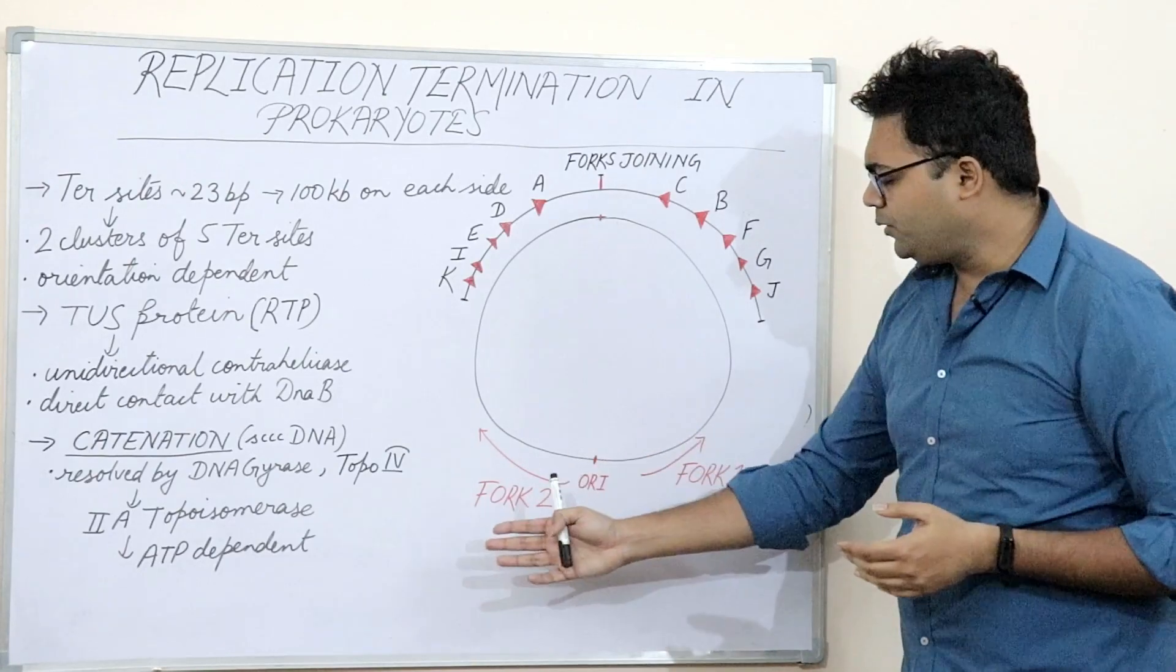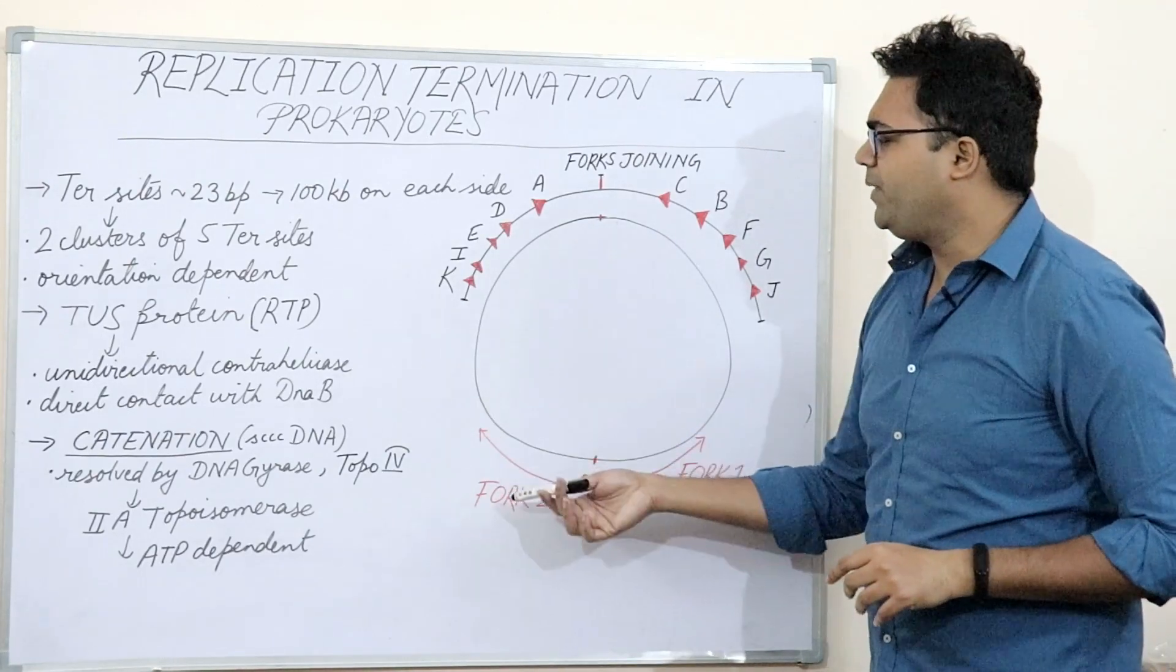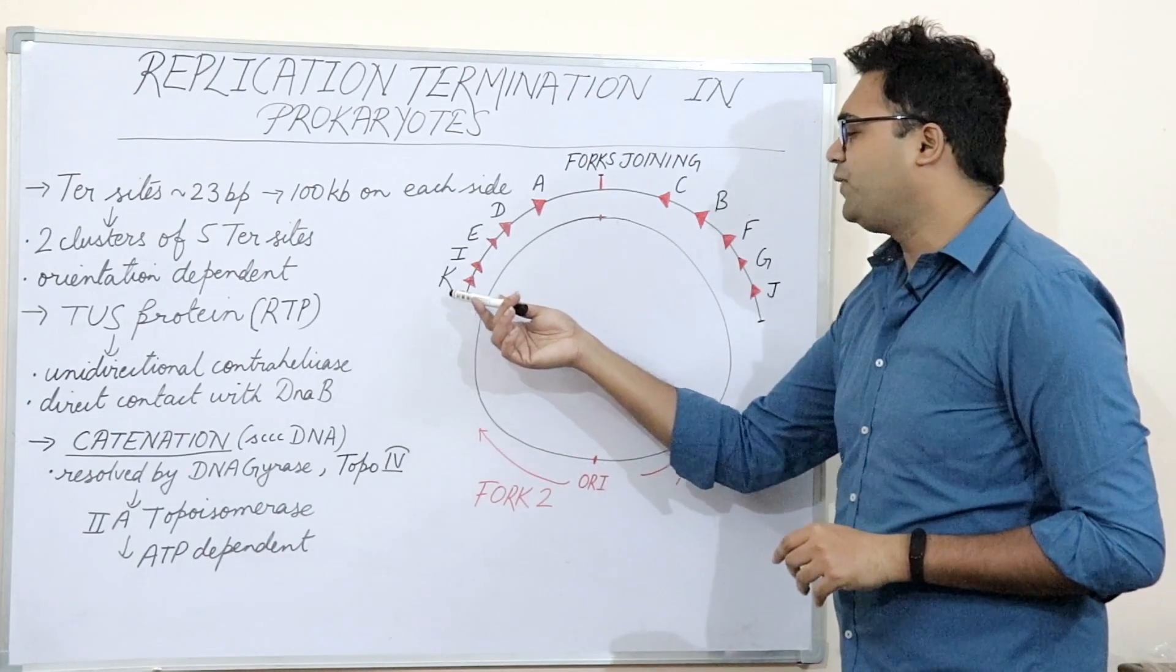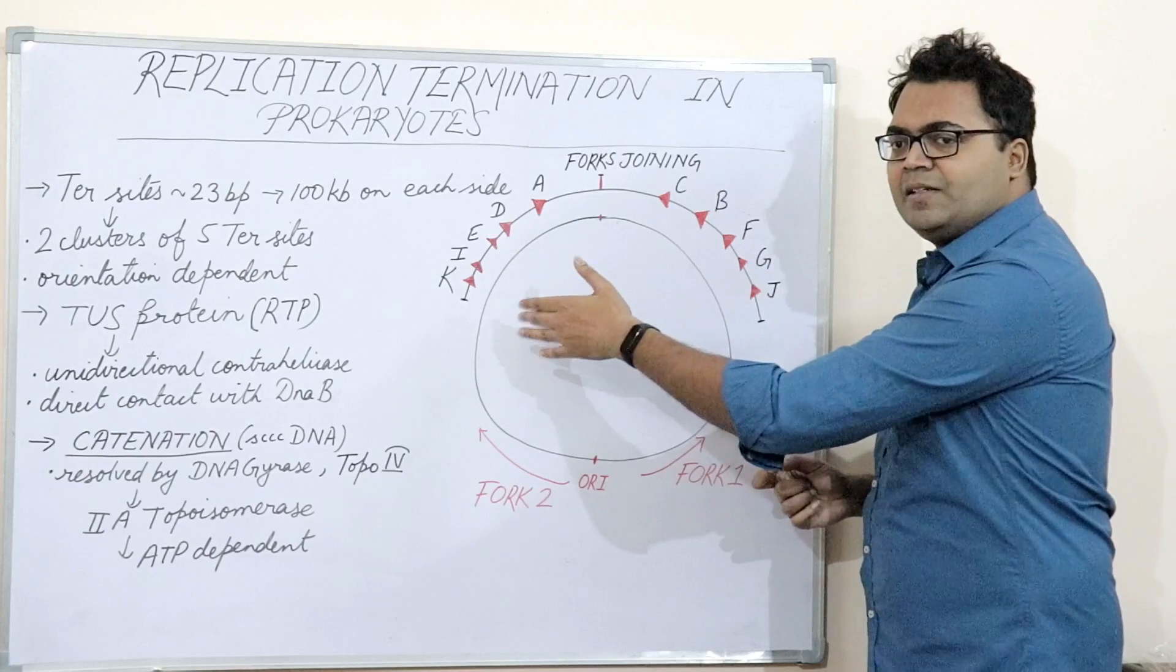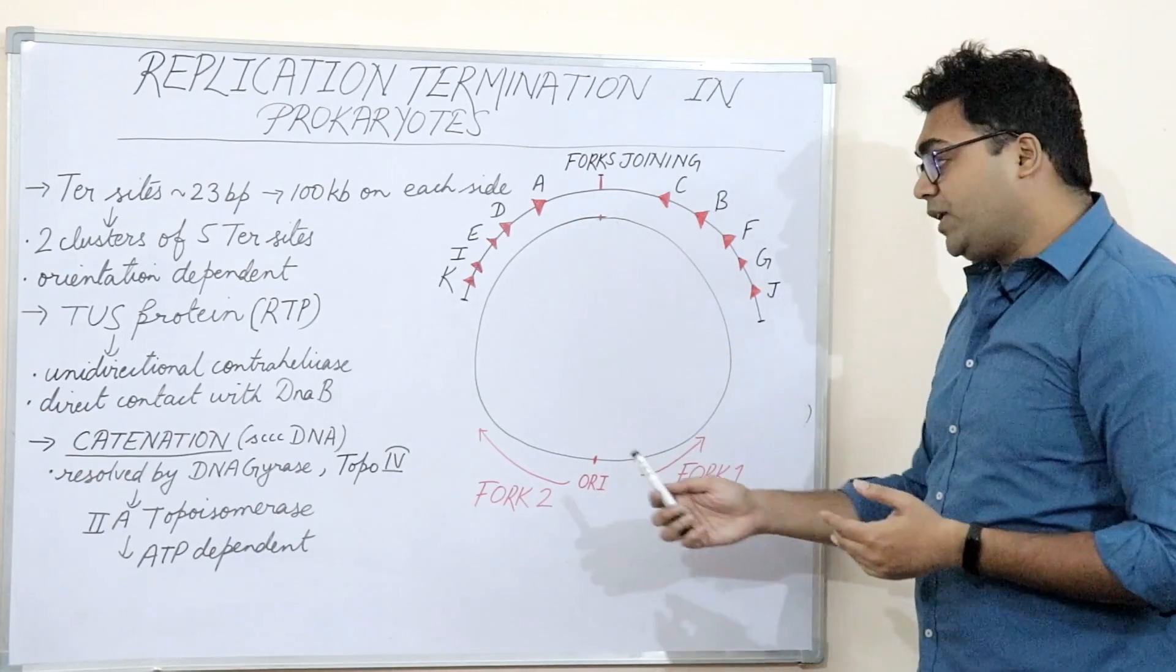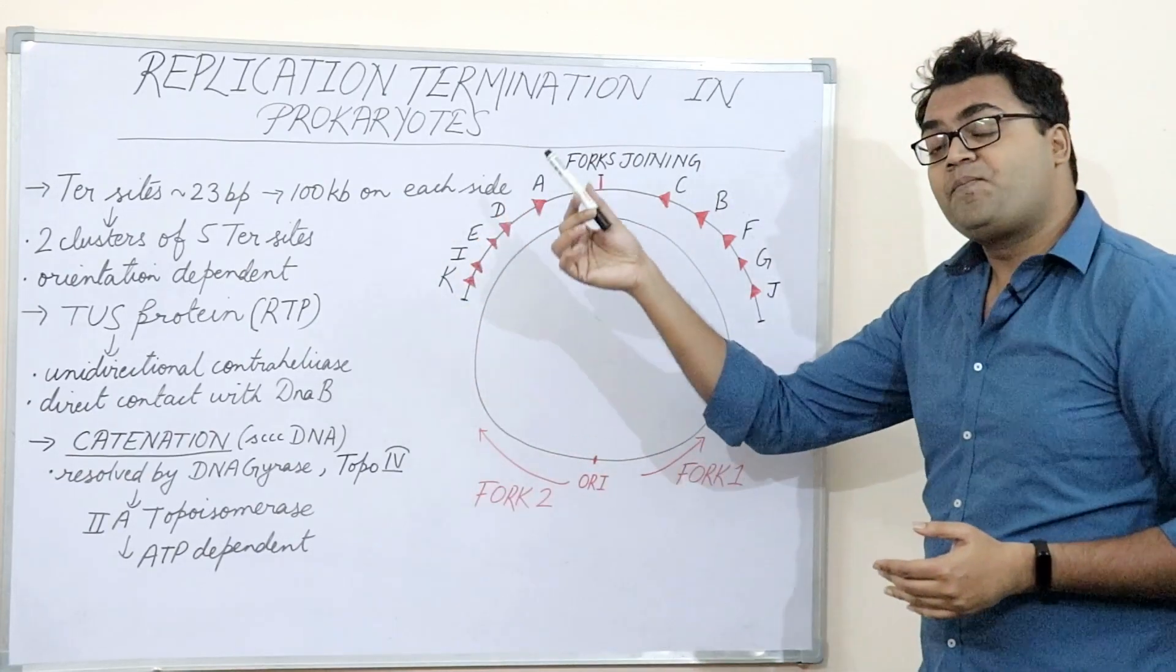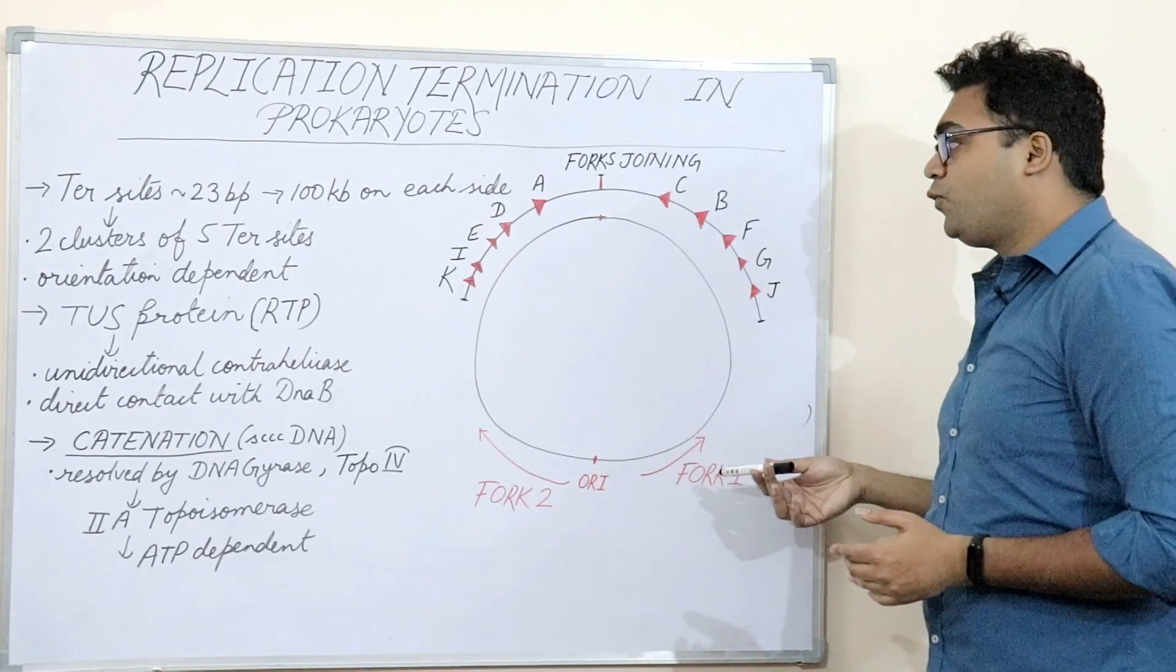Now, let us come to replication fork 2. Same way, you can see the direction of replication fork 2 coincides with the direction of K, I, E, D and A termination sites. So, these sites become permissible sites for replication fork 2 whereas these sites were non-permissible sites for replication fork 1.